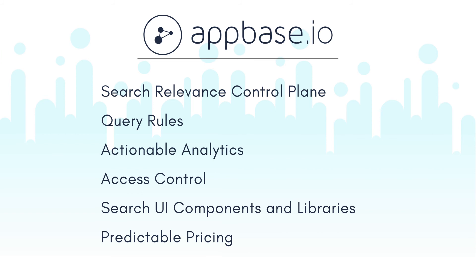Visualize the impact of search with popular search terms, CTRs, conversions, and more. The telemetry to record end-user behavior is pre-configured out of the box. AppBase.io pricing plans are based on storage in GBs and not by total records. At scale, you can save up to 10x with AppBase.io compared to Algolia.